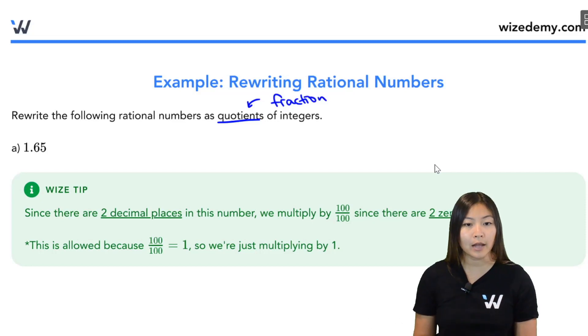So let's take a look at part A, 1.65. The wise tip that I have for you here is whenever you want to convert a decimal to a fraction, you're going to count the number of decimal places. This guy has two decimal places. Then what I need to do is multiply this by a number that has two zeros, and the cleanest one is 100.